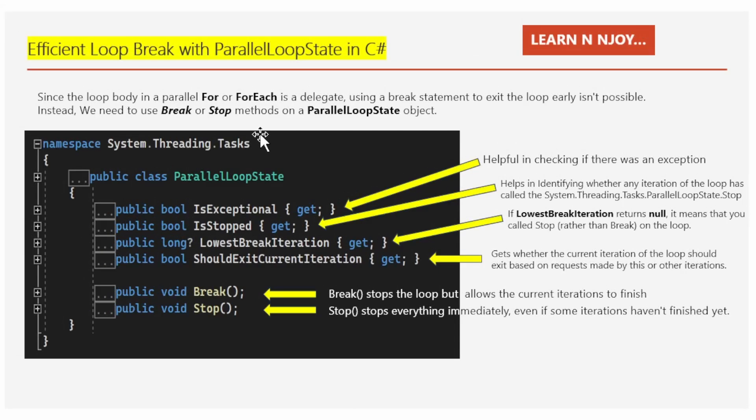Let's understand the parallel loop state class first. The ParallelLoopState class enables iterations of parallel loops to interact with other iterations. An instance of this class is provided by System.Threading.Tasks.Parallel to each loop — we cannot create its instances in our code manually. Within the ParallelLoopState class, we have several properties and methods at our disposal.